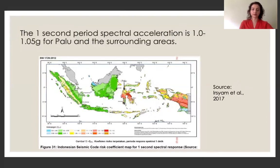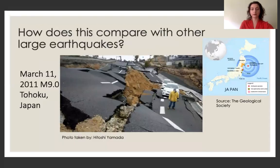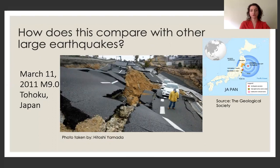And lastly, we have the one second period spectral acceleration map, which for Palu and its surrounding areas have been given a range from 0.1 to 0.5 G. Now, by themselves, the values may not mean very much. So let us compare this with another big earthquake that we know generated extreme soil liquefaction. And in this case, we will look at the magnitude 9 Great Tohoku earthquake, which happened on March 11, 2011.